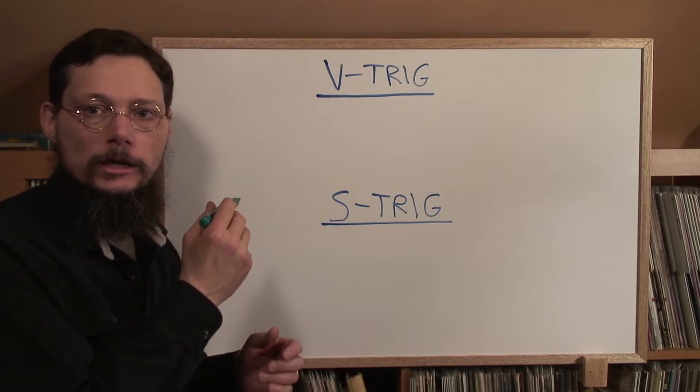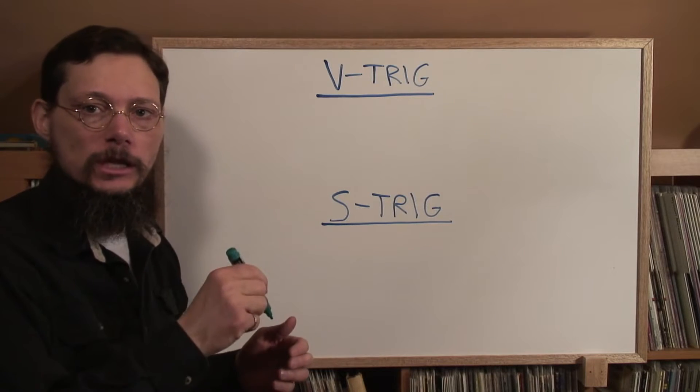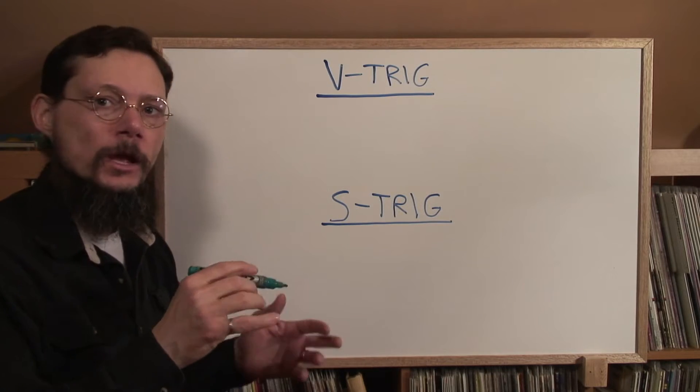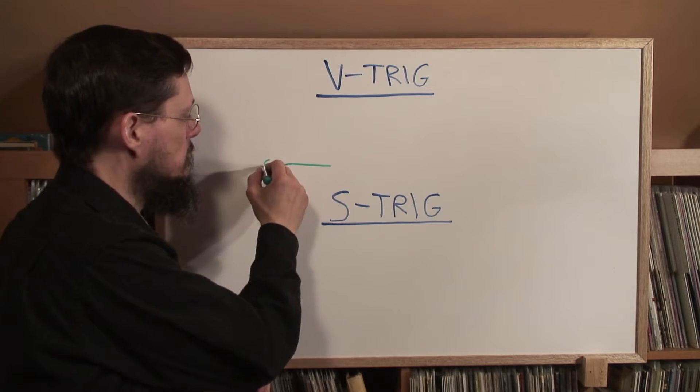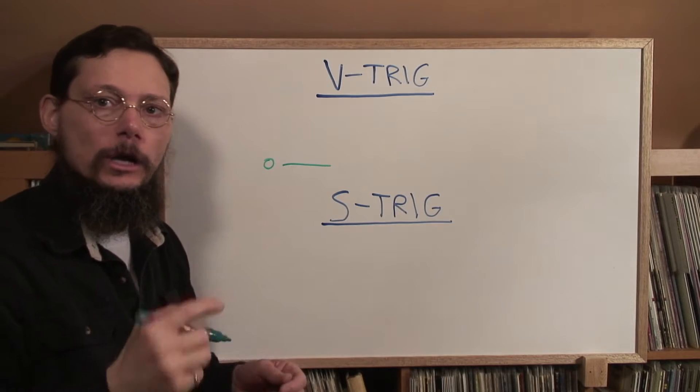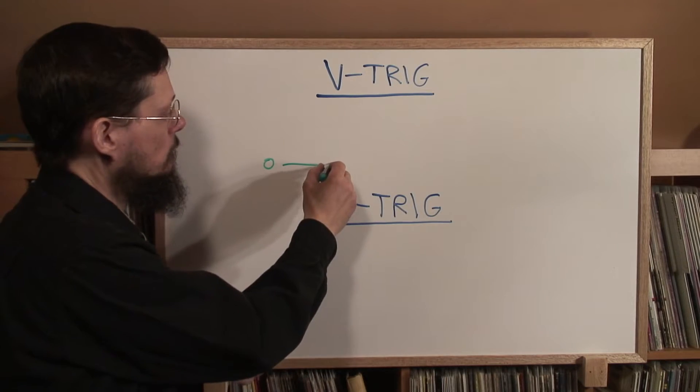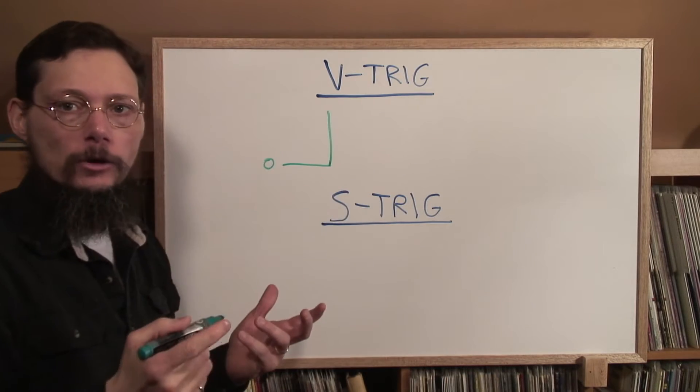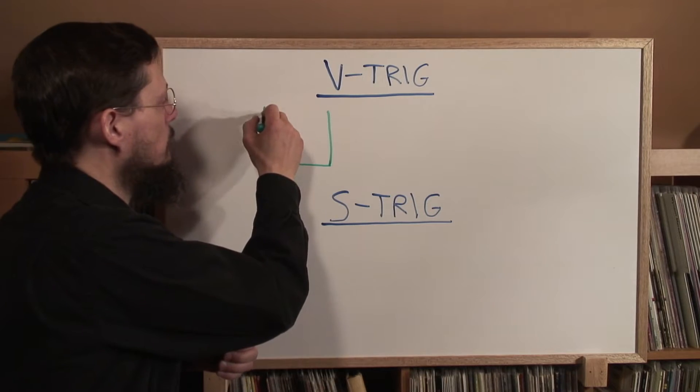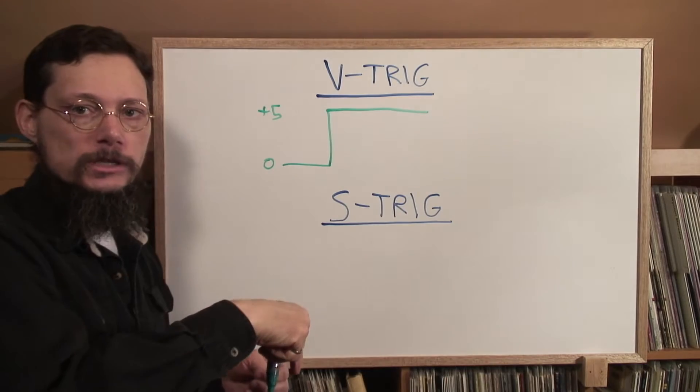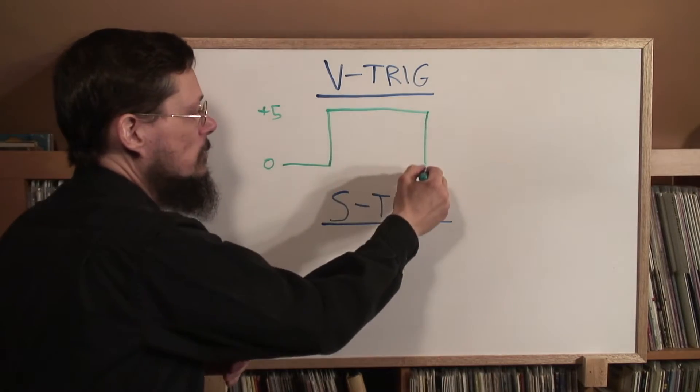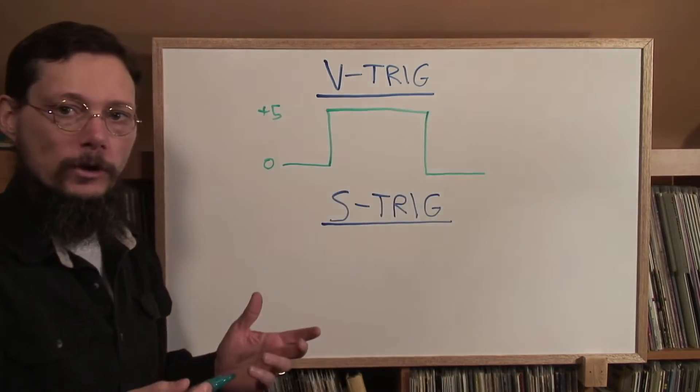A V-trig is a voltage representation of the key down state of the synth. So if no keys are pressed down, the V-trig level is at zero volts or ground. As soon as you push a key down, it goes up to some higher voltage level, typically plus five volts, and it stays there as long as you have a key pressed down. As soon as you release all the keys, it goes back down to zero volts or ground.